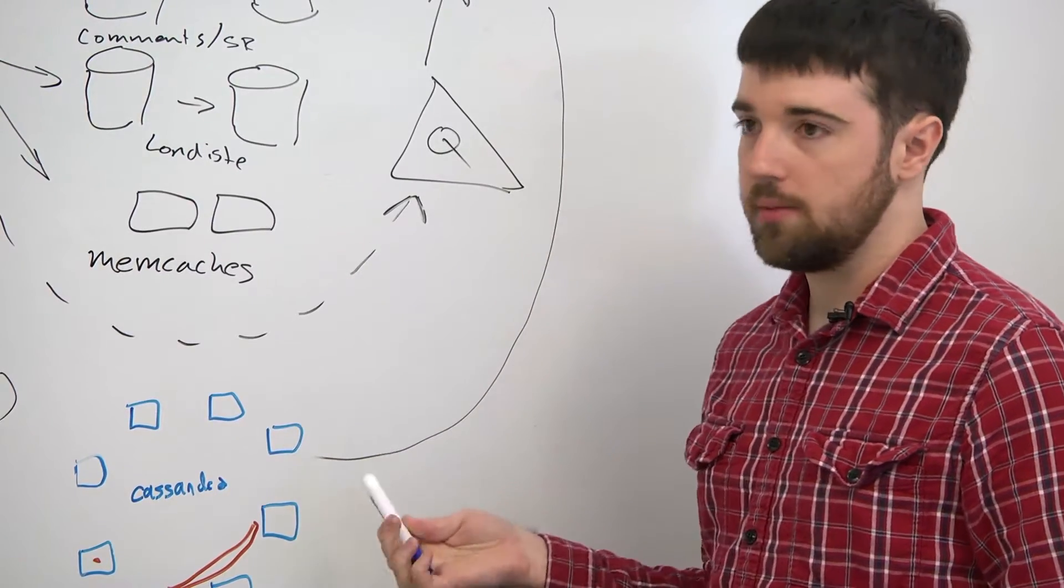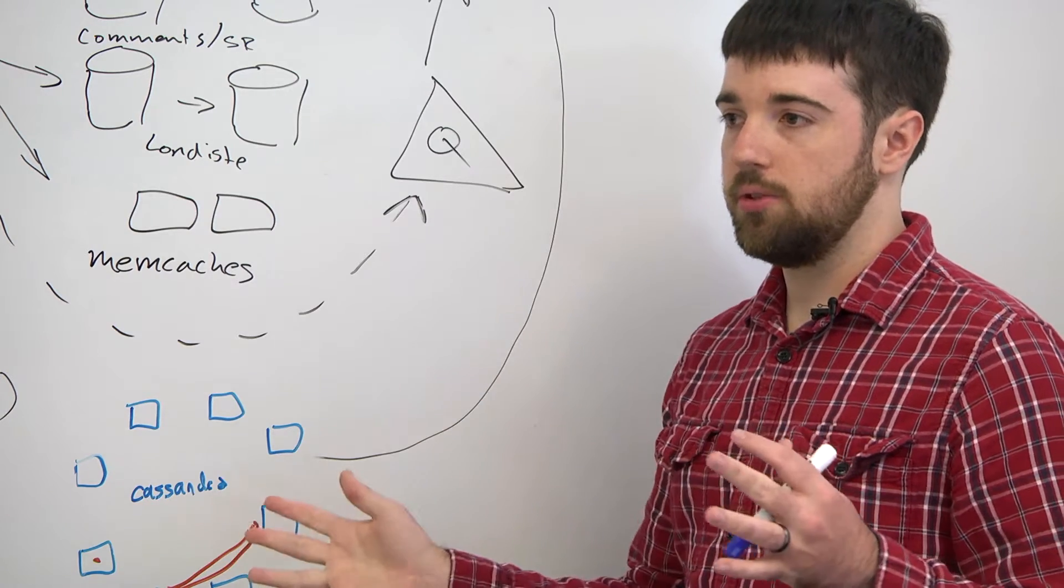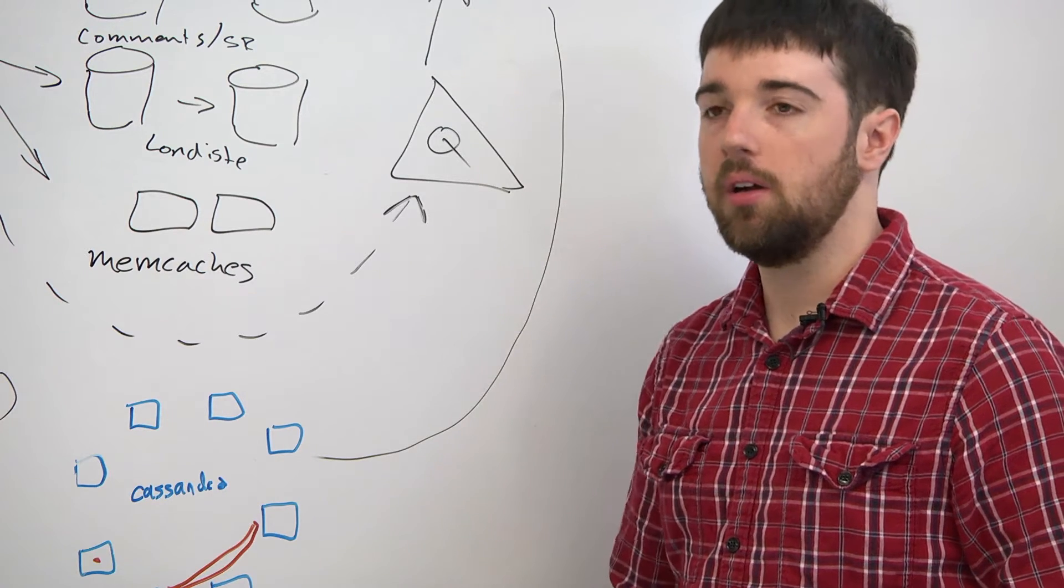So we're moving locking into something called Zookeeper, which implements a tree system with a guaranteed order of operations. And with that, you can build locking.